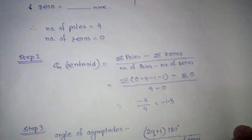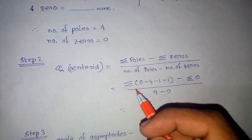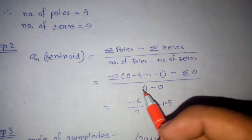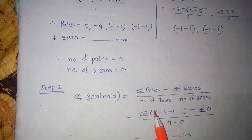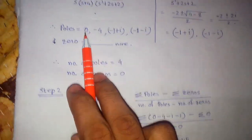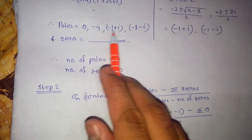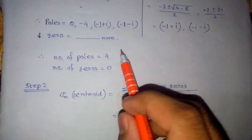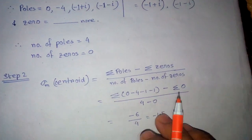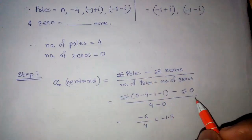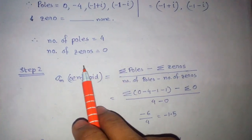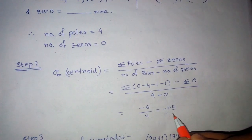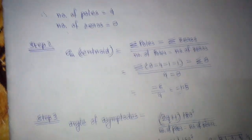In step 2 we have to find out the centroid. The centroid is the summation of poles minus summation of zeros, divided by number of poles minus number of zeros. The summation of poles uses only the real parts: 0 minus 4 minus 1 minus 1. The summation of zeros is 0. So number of poles minus number of zeros is 4 minus 0, giving a centroid of minus 1.5.